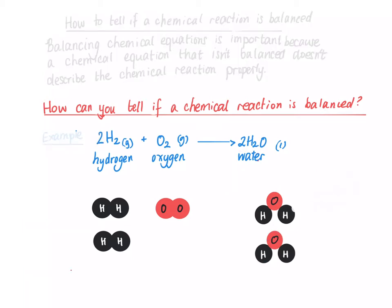So if we look at what we've got: on the left hand side we have four hydrogens and two oxygens. On the right hand side we also have four hydrogens and two oxygens. Because we have four hydrogens on each side and two oxygens on each side, this chemical equation is balanced.